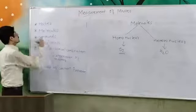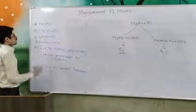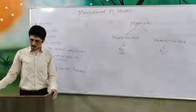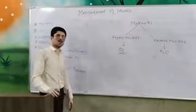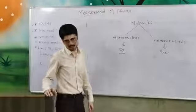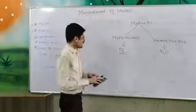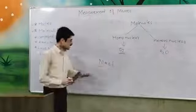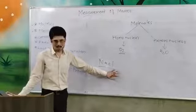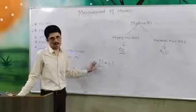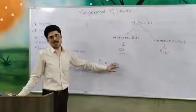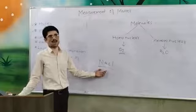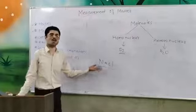We have seen matter, we have seen molecules. Now we are going to see what are the compounds. As we all know, compounds are formed by chemical combination of different elements. For example, if we see the example of NaCl. In NaCl, there is one atom of sodium and one atom of chlorine. When one atom of sodium reacts with one atom of chlorine, then it forms a compound called NaCl.